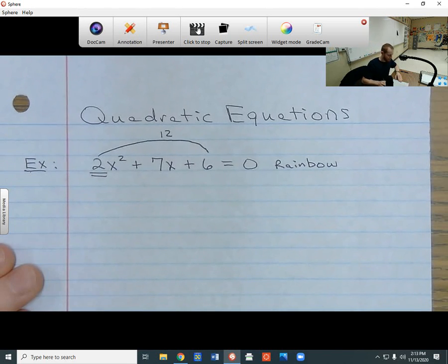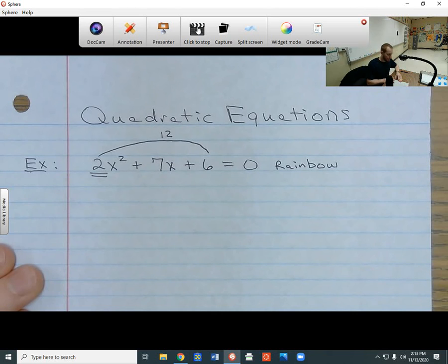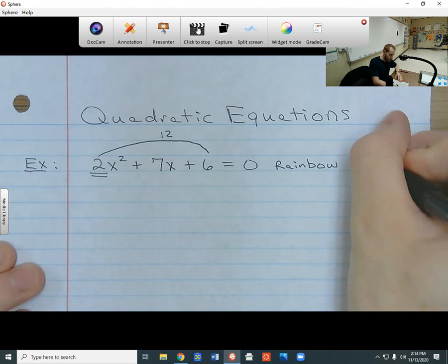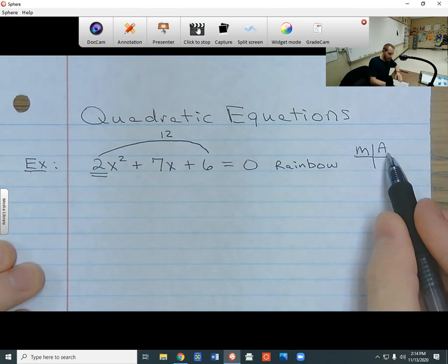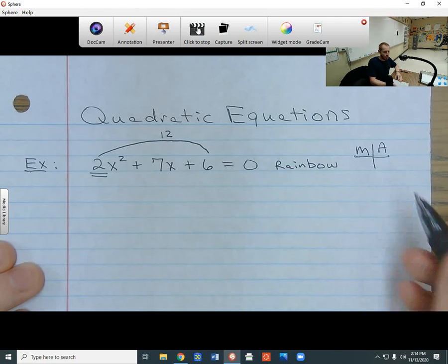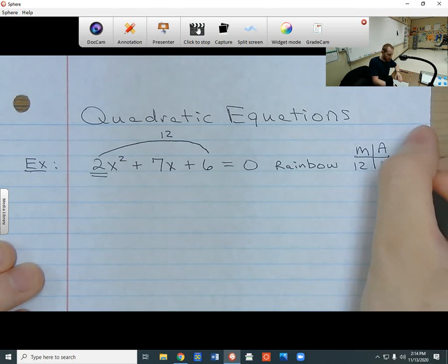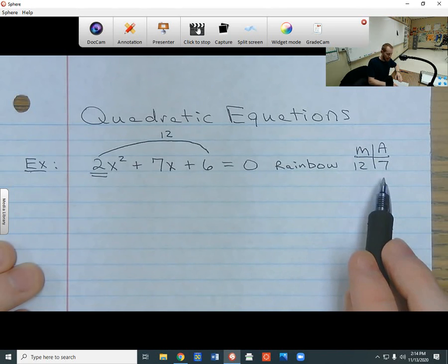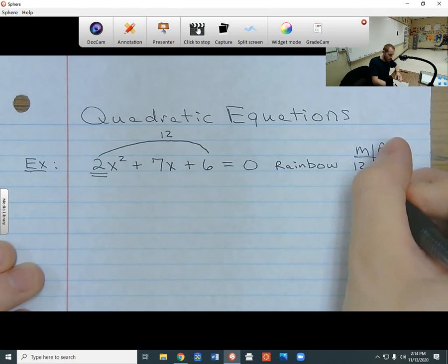Now, I have to find two numbers that multiply to 12 but also add up to the middle number. So I draw my MA chart over to this side. I have an M and I have an A, where the M stands for multiply and the A stands for add. So we're going to multiply to 12, but at the same time, we have to add up to 7 since that's the middle number. So what are the two numbers that will multiply to 12 but add up to 7? That's going to be the 4 and 3.